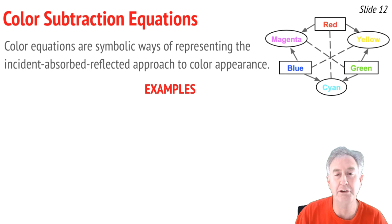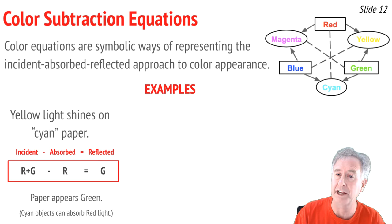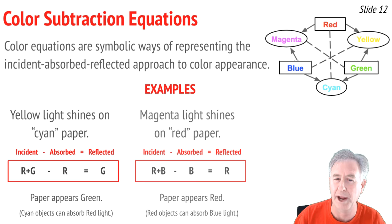Color equations are symbolic ways of representing the incident-absorbed-reflected model. For yellow light on cyan paper: yellow is R + G, and cyan paper absorbs red, so R + G − R = G. That paper looks green. Another example: magenta light on red paper. Magenta is R + B, and red paper absorbs blue and green whenever they're present, so R + B − B = R. That paper appears red.